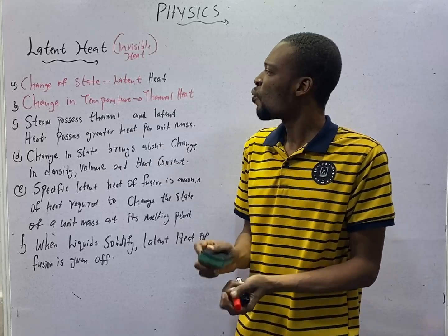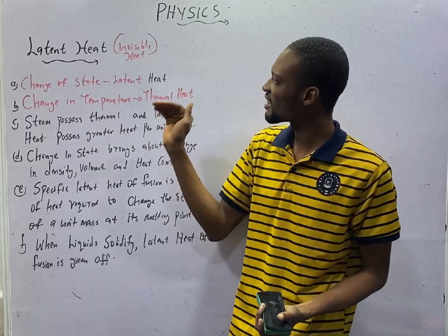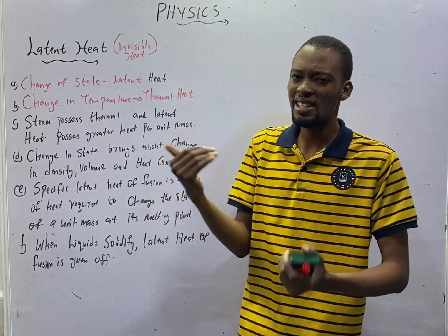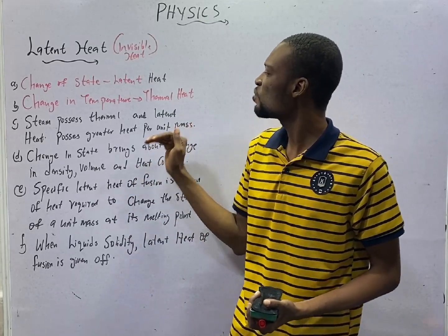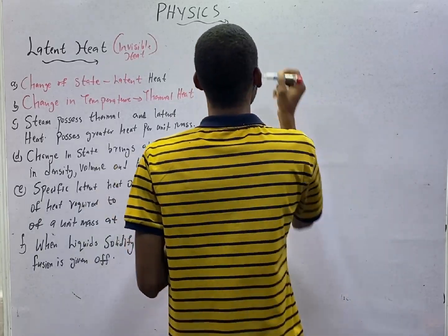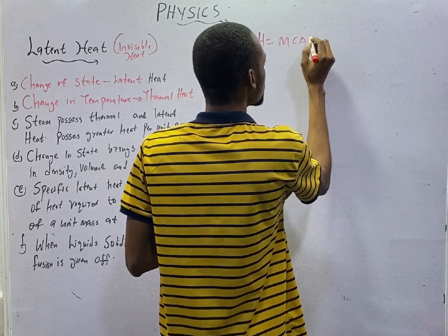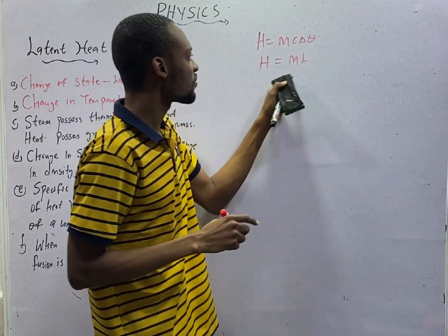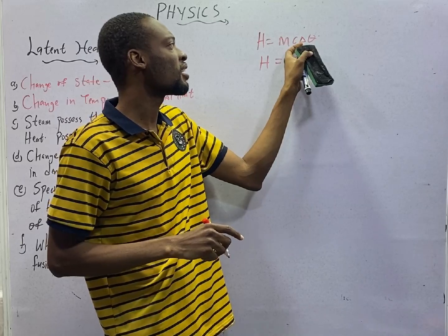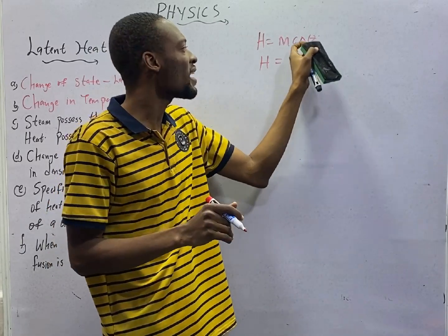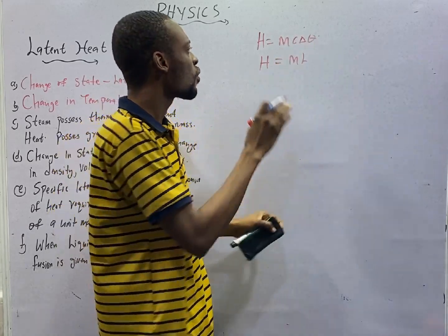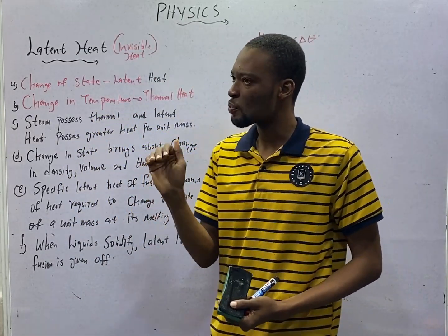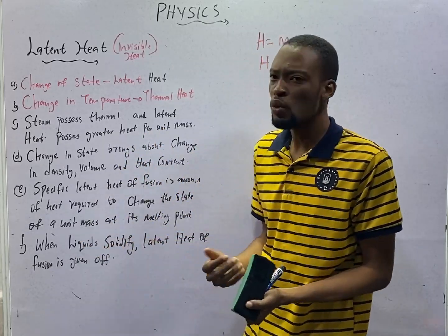In summary, when it comes to change of states, we are dealing with latent heat, and this heat is hidden. When you hear change in temperature, know that we are dealing with thermal heat, and thermal heat equals mc times change in temperature. H equals mL — this is for latent heat. This is for thermal heat. L is the specific latent heat, while c is specific heat capacity.